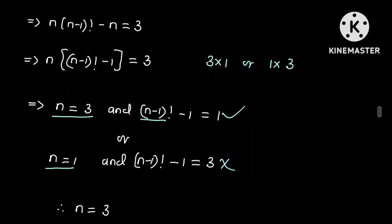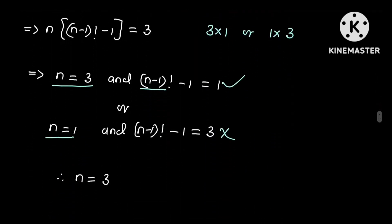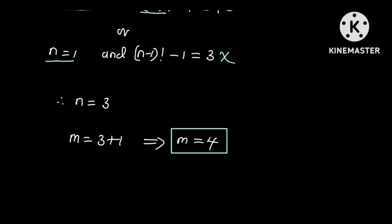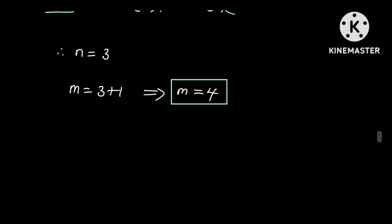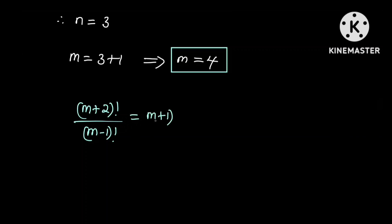Recalling that M = N + 1, we get M = 3 + 1, which implies M = 4. So we conclude: if (M+2)! divided by (M-1)! equals (M+1)!, then M = 4.